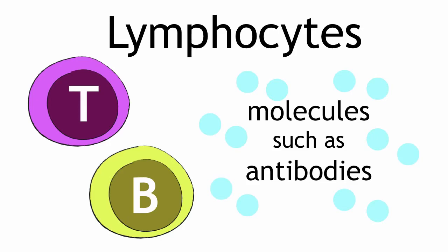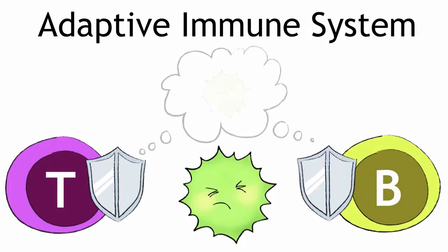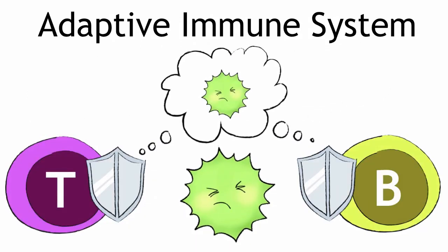T and B cells are members of the so-called adaptive immune system. Once these cells get activated, they are able to remember an infection, so that next time the same bacteria enters the body, it can be destroyed more rapidly.